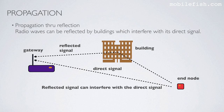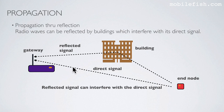There is also propagation through reflection. Radio waves can be reflected by buildings, which interferes with the direct signal. Here is an end node sending a direct signal to the gateway. If there is a building, the signal can be reflected, and the reflected signal can interfere with the direct signal.